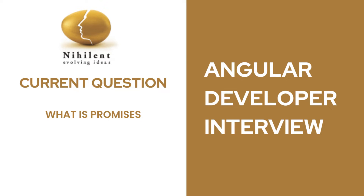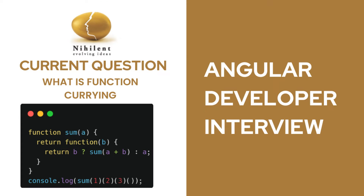Do you know currying? Yes. Basically, suppose I don't know how many parameters will be coming — one bracket, then another two, then another three. With function currying, we can access variables similarly to closures: the parent scope has a variable and we pass it to the inner function. We can pass n number of parameters that way.